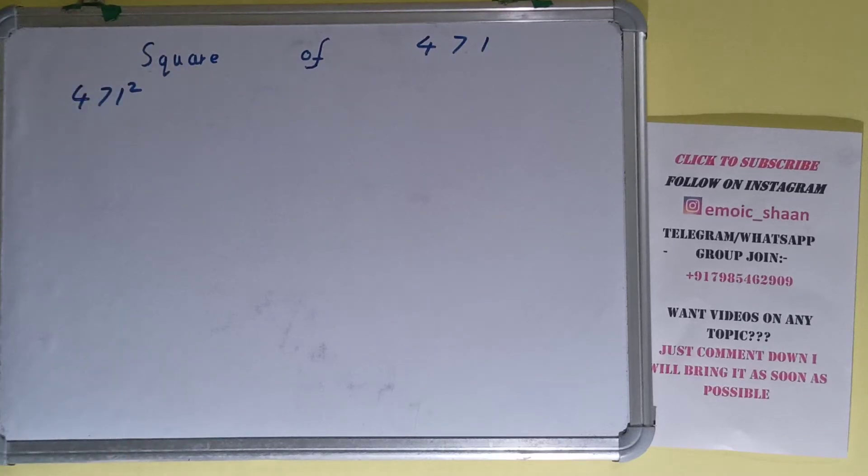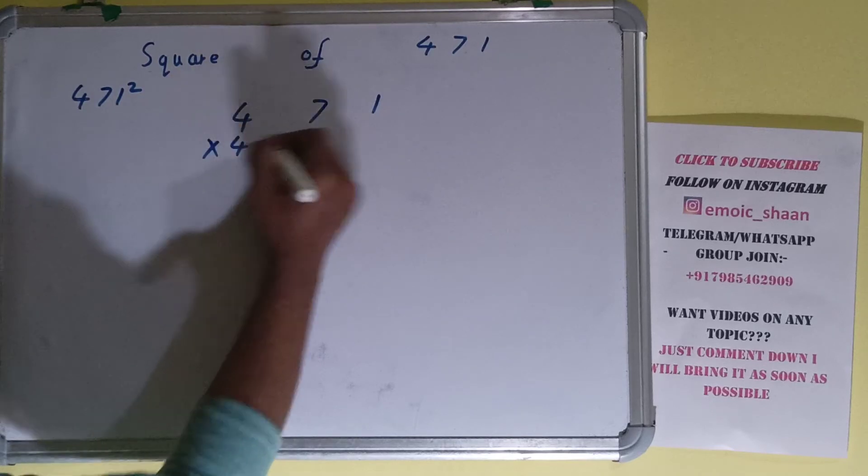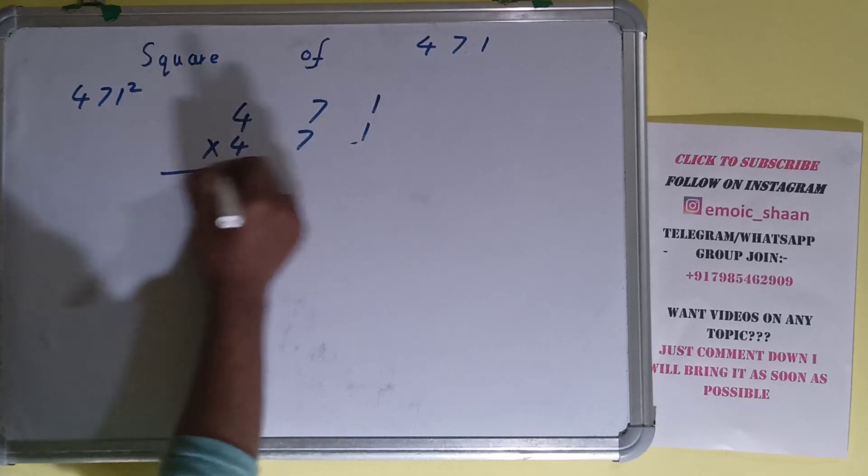Okay, now moving on to the solution. Square basically means multiplying the number by itself, and the number here is 471. To find square of it, we need to multiply by itself, that is 471, and do the multiplication.